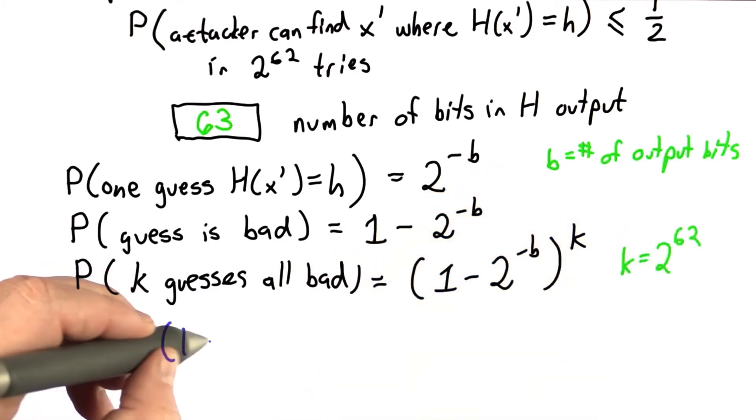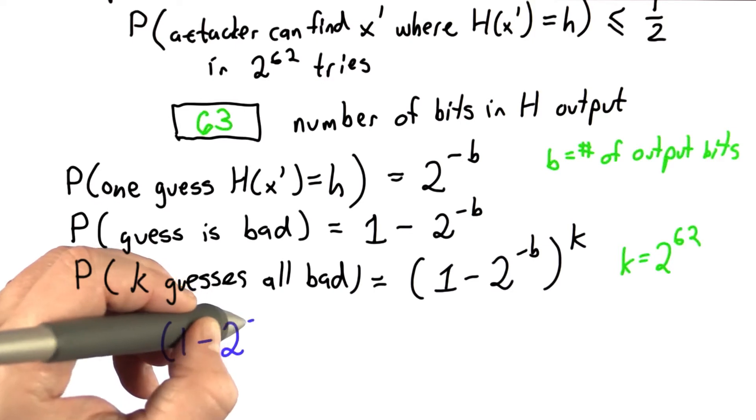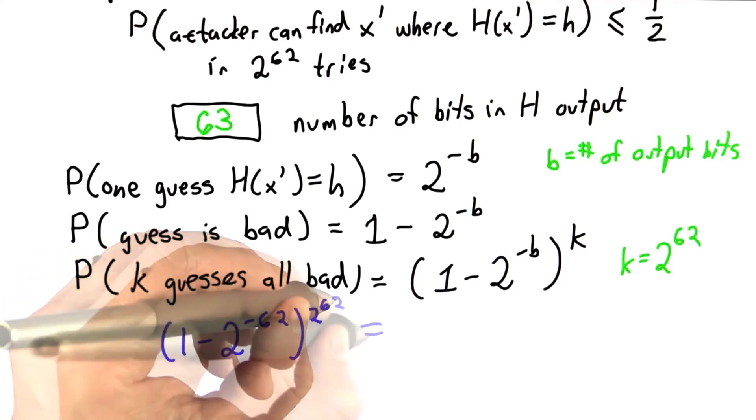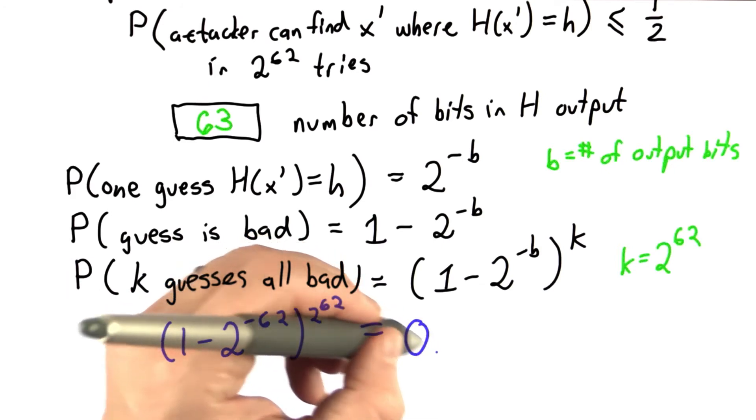And we can solve 1 minus 2 to the negative 62 to the 2 to the 62. That's equal to approximately 0.63.